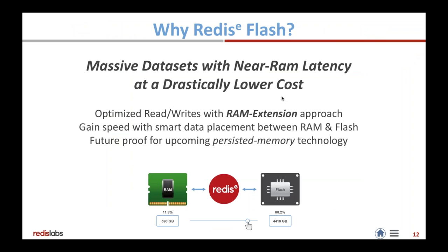Redis Enterprise Flash allows you to bring massive datasets at near-RAM latencies at drastically lower cost. It fundamentally extends RAM into Flash. This extension is extremely efficient — it pushes latencies very low and uses Flash storage effectively. It's also future-proof: persistent memory technology like 3D Crosspoint is coming online in the next few years, and we think RAM and Flash are going to converge, giving us a great set of capabilities for the next wave in hardware.